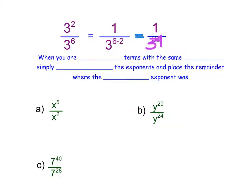Here we're going to summarize what we just saw in words. When you are dividing — remember fractions are division — so when you are dividing terms with the same base, you simply need to subtract the exponents and place the remaining term where the larger exponent was.